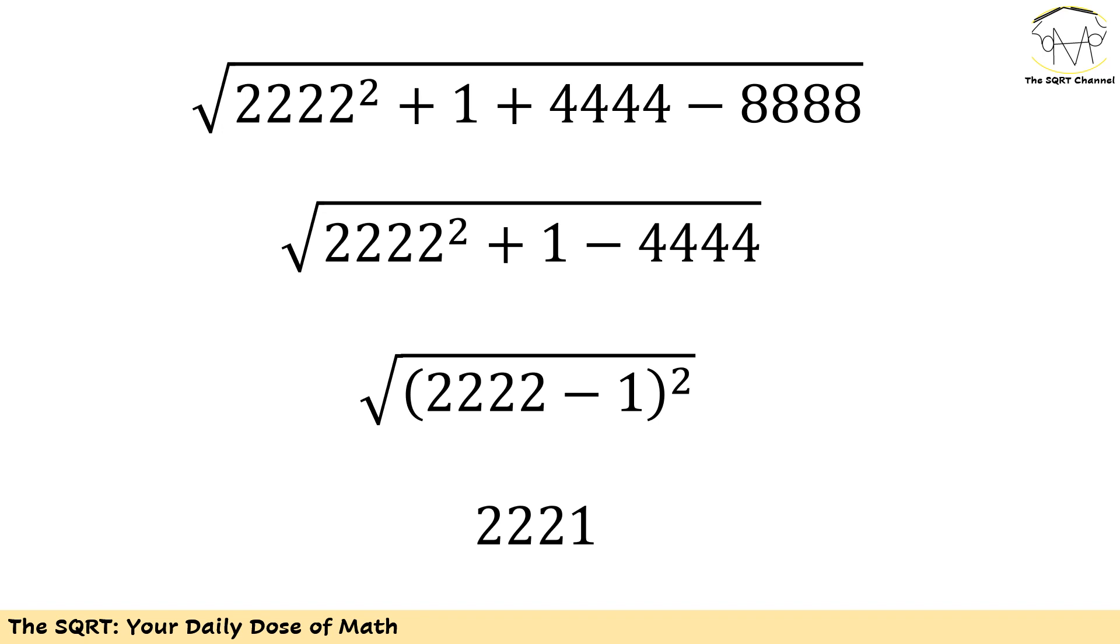It's 2222² plus 1 minus 4444, which is (2222 - 1)². Then I have this radical on top of it, which basically means I have to remove the power of 2 with this radical and then I will end up with 2221 as the final answer.